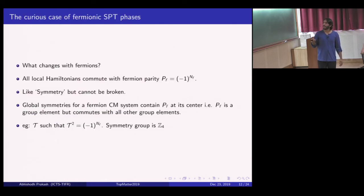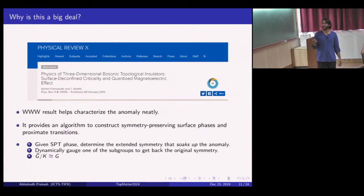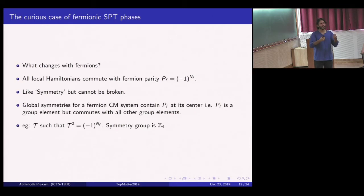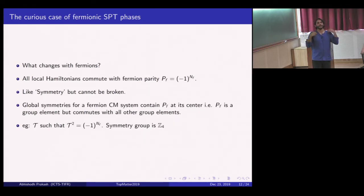This entire story, including Wong-Wen-Witten's result, is specific to bosons. You could ask what happens for fermionic non-trivial phases. With fermions the Hilbert space is different: even though creation and annihilation operators at a particular point appear local, they really aren't—the creation operator at site one anti-commutes with the creation operator at site 350,000. So you can only add operators to the Hamiltonian that are bilocal in fermion creation and annihilation operators, which you can interpret as some kind of symmetry called fermion parity.